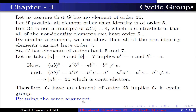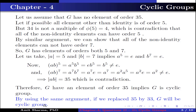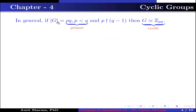Now by using the same argument, if we replace 35 by 33, G will be a cyclic group. In general, if the order of G equals PQ where P is less than Q, P and Q are prime numbers, and P does not divide Q minus 1, then G is isomorphic to Z_PQ, which is a cyclic group.